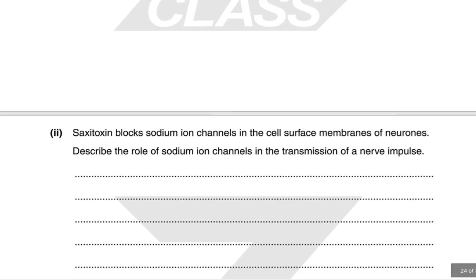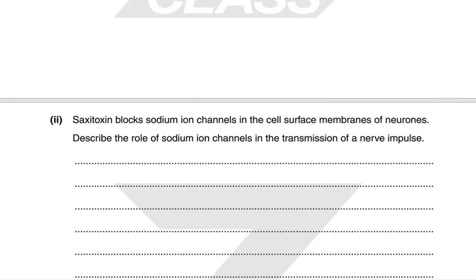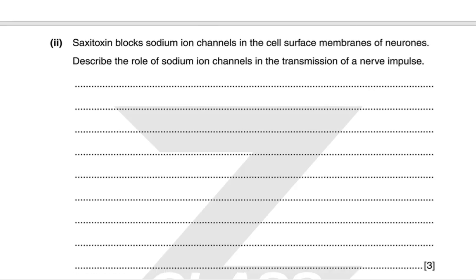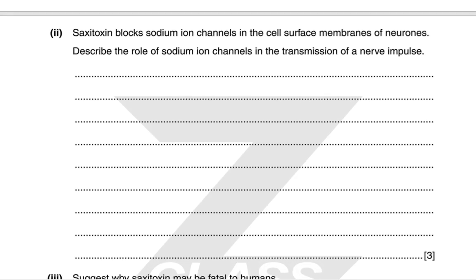Saxitoxin blocks sodium ion channels in the cell surface membranes of neurons. Voltage-gated sodium ion channels change shape and open when the membrane depolarizes — for example when an action potential arrives or a neurotransmitter binds to receptors across the synaptic cleft — causing sodium ions to flood in down their concentration gradient. The channels close when the membrane repolarizes, and with the help of the sodium-potassium pump, the membrane returns to its resting potential.